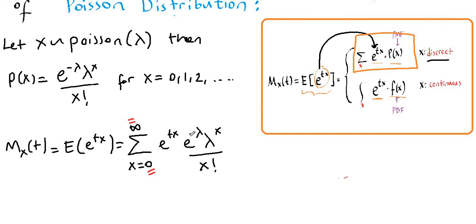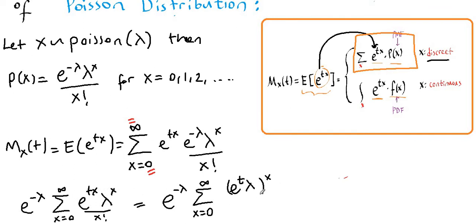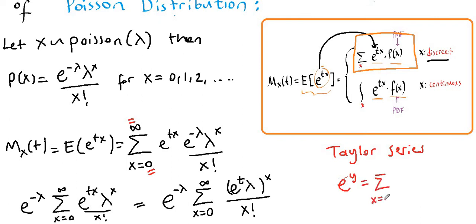We can take out e to the negative lambda in front of the summation sign because it is a constant. So we have e to the negative lambda times the sum from 0 to infinity of e to the tX times lambda to the X over X factorial. Using exponential rules, we can rearrange the numerator so that the summation becomes the sum of e to the t times lambda, with X as the exponent, over X factorial.